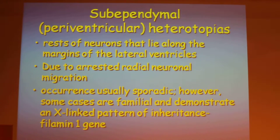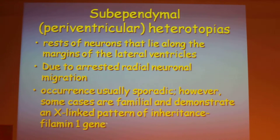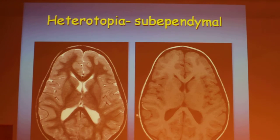It is the rest of neurons that lie along the margins of the lateral ventricle, and it is due to arrested radial neuronal migration. The occurrence usually is sporadic. However, there are some cases that are familial and it has an X-linked pattern of inheritance.